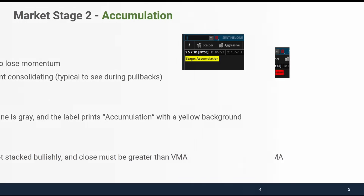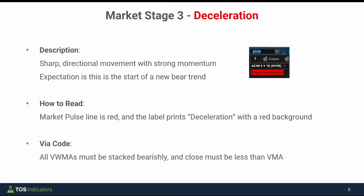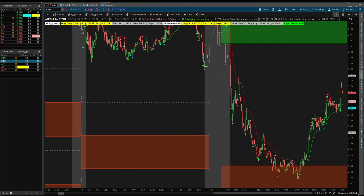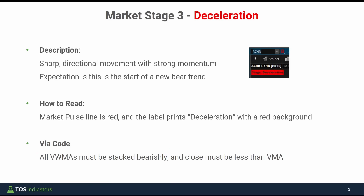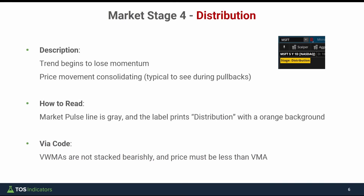We inverse this for deceleration — bearish trend, looking for momentum in that direction. We see the market pulse label tell us very clearly we're in the stage of deceleration, and the market pulse line prints red. From a code perspective this is the exact opposite of acceleration: all of our volume weighted moving averages must be stacked bearishly and our closing price must be below the variable moving average. Distribution is nearly the same except we are not stacked bearishly on our volume weighted moving averages.